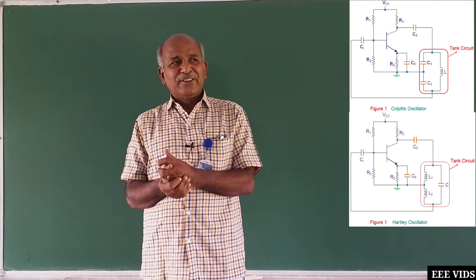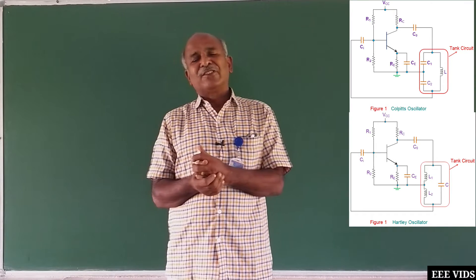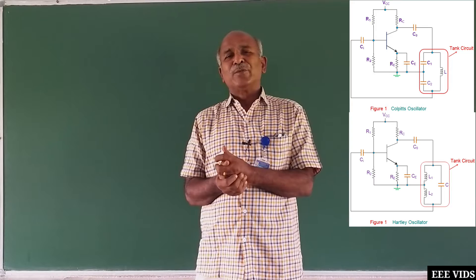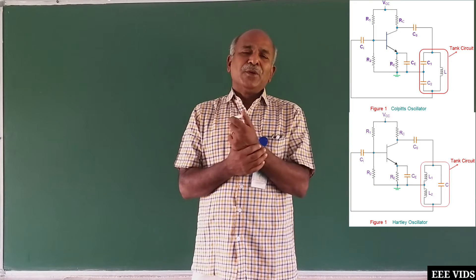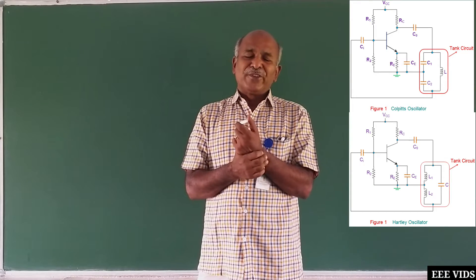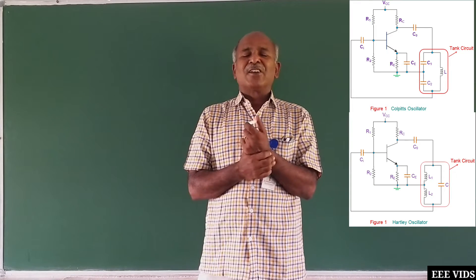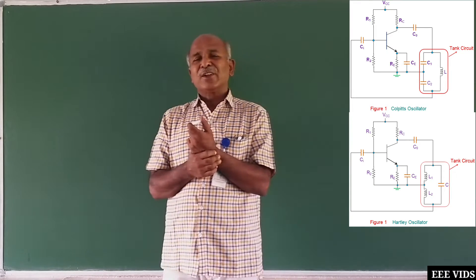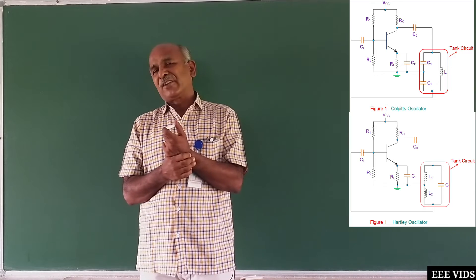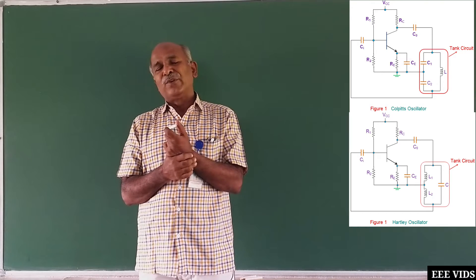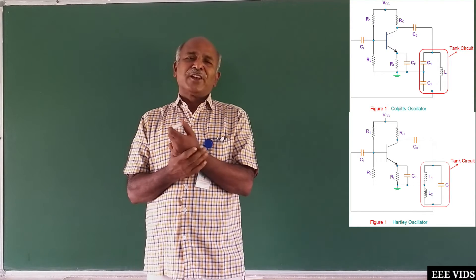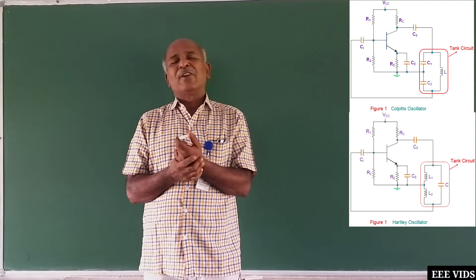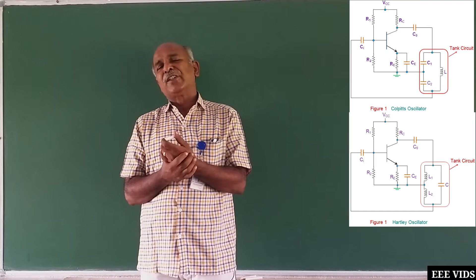LC Resonance Oscillators are of three types: one is Colpitts oscillator, Hartley oscillator, and another one is tuned collector oscillator. In our syllabus, Colpitts and Hartley — these two are covered. There is a similarity between them, and a tank circuit is used in both.